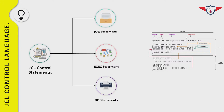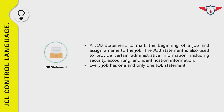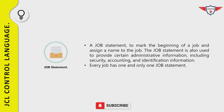Now let's discuss each job control statement one by one. The first is the job card. A job statement is the first statement of any JCL. It marks the beginning of a job and assigns a name to it. The job statement is used to provide administrative information including security, accounting, and identification information. A JCL can have one and only one job card — you cannot have more than one job card in a single JCL.